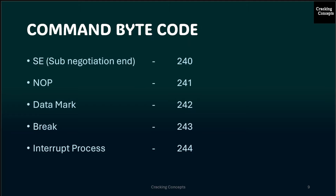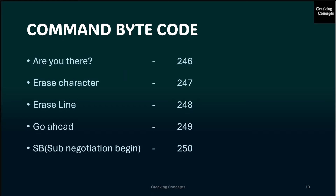Now we will see some examples of command byte codes. SE, or Subnegotiation End, has byte code 240. NOP is 241. Datamark is 242. Break is 243. Interrupt Process is 244. Are You There is 246. Erase Character is 247. Erase Line is 248. Go Ahead is 249. And SB, which is Subnegotiation Begin, is 250.